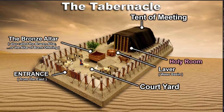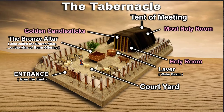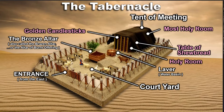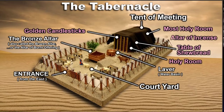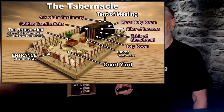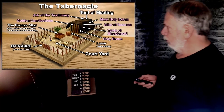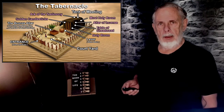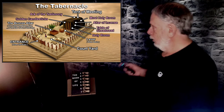There are two rooms in the tent of meeting. The first is called the holy room and the second is called the most holy room. Inside the holy room there are golden candlesticks, a table of showbread where bread was placed, and the altar of incense. In the most holy room — just as the name suggests — is where the ark of the testimony is kept. This is where God would meet with the high priest once a year in the most holy room.